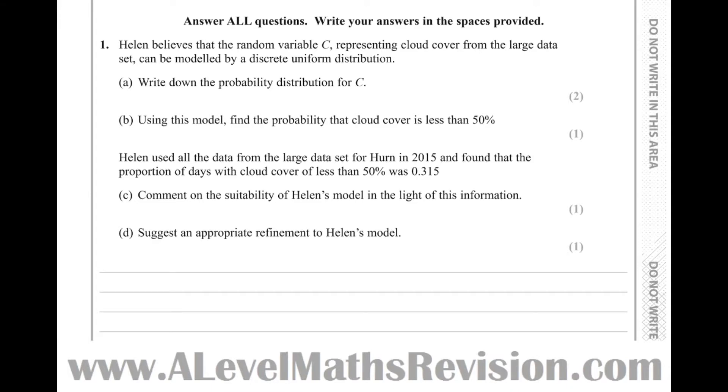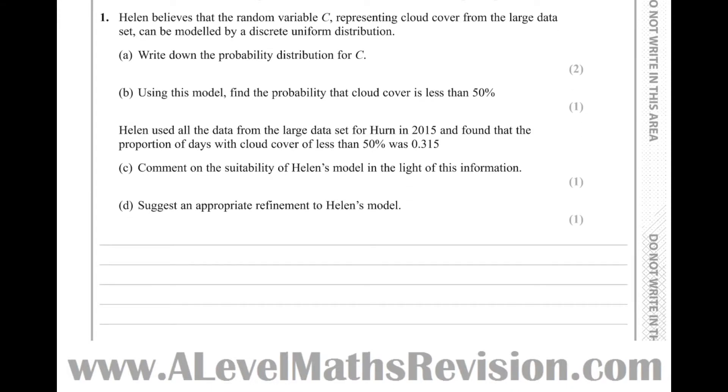Let's have a look at the answer to the question now. Write down the probability distribution for C. Part A: well, X can be zero, one, two, three, four, five, six, seven, eight - so there's nine outcomes altogether. And the probability that X equals a particular value of X is one ninth for each of them. So that's part A.